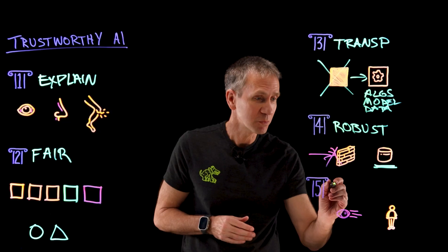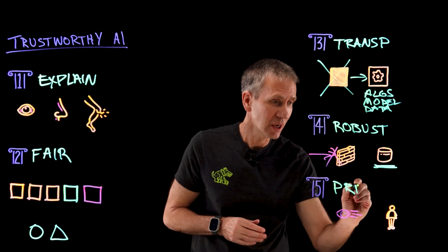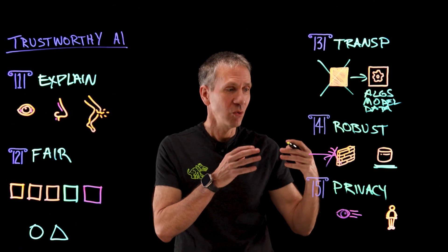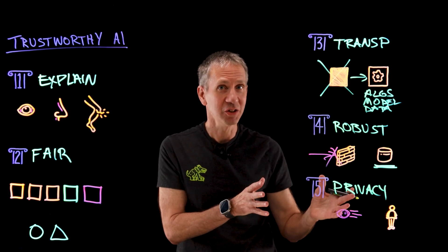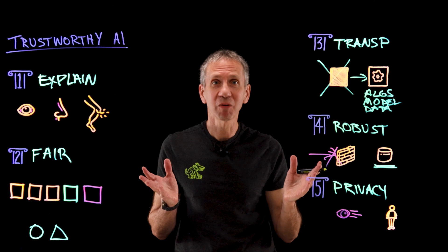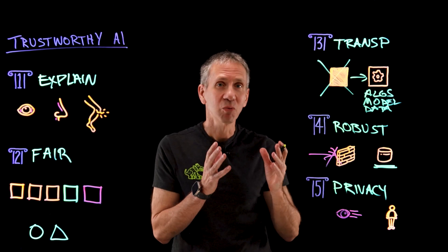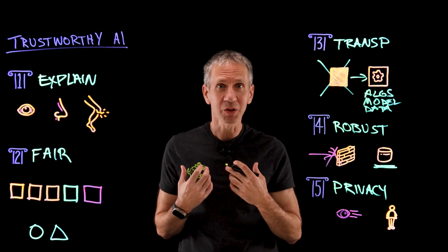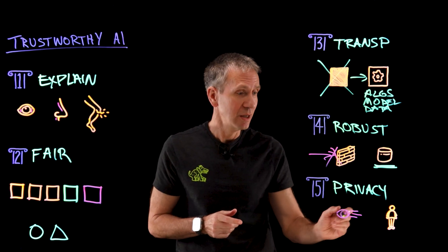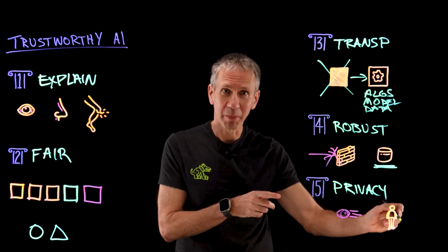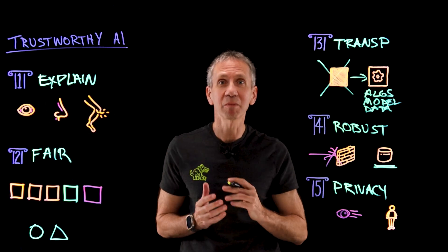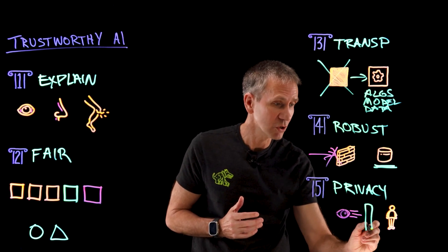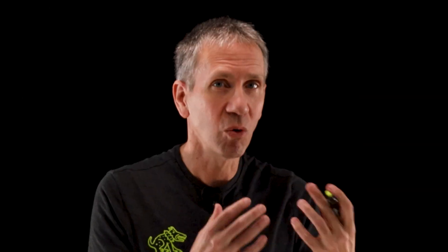The fifth principle of trustworthy AI is privacy. I want to make sure that what goes into the chatbot stays in the chatbot and doesn't get shared with everyone else. We don't want a case where your data is our business model — we want a case where your data is your data. We don't want the chatbot spying on you or the information you put into it going out and being shared with the rest of the world. I want protection ensuring that what I'm putting in is still my data and not shared with the whole wide world.